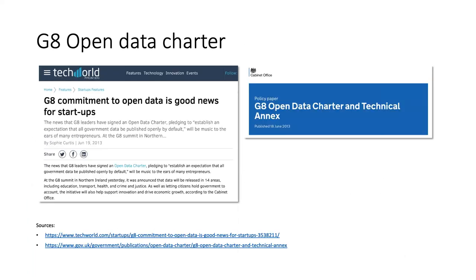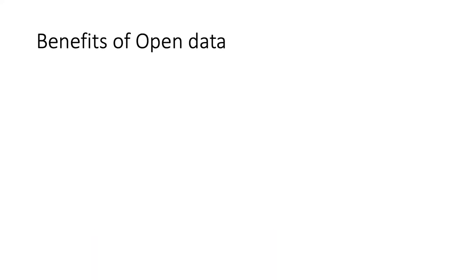In 2013 the UK government was one of the signatories to the G8 Open Data Charter, which essentially legally committed us to publishing open data. That is still in force and is still a useful lever when trying to persuade people they should be doing more. Having that legal underpinning and that reason why data should be published, we can start to look at the benefits of doing so.